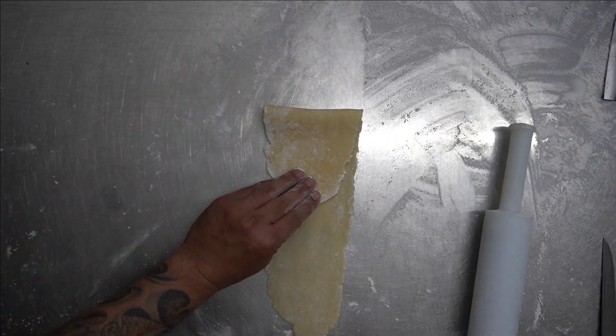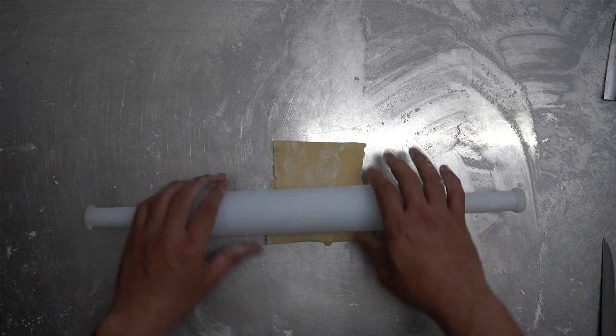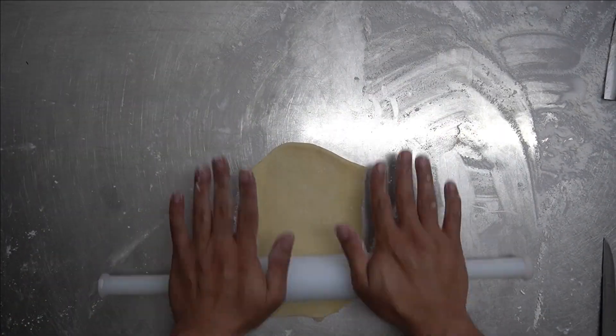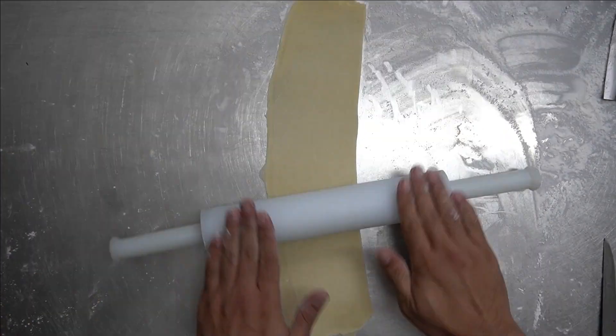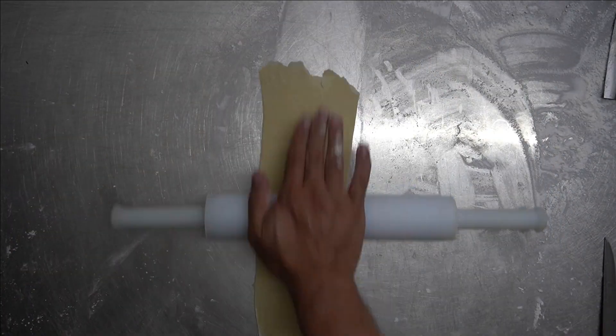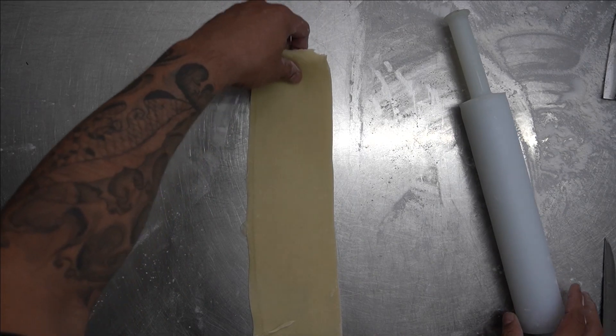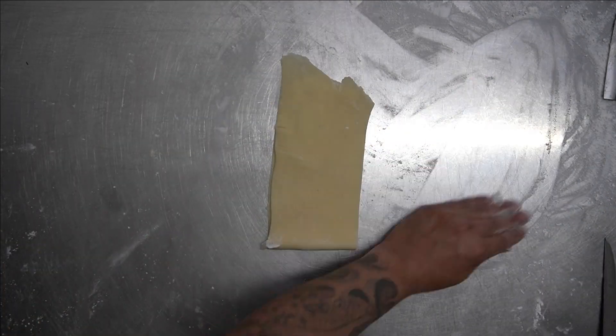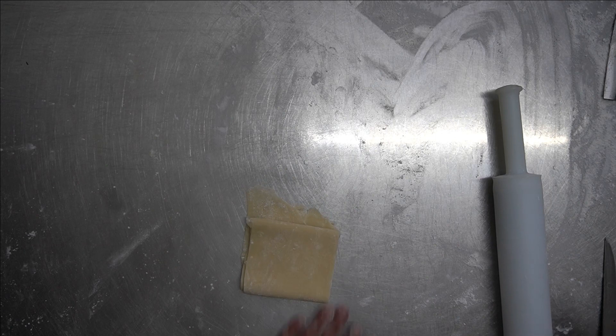Fold it. Once you have rolled it out, dust both sides. After dusting it, you need to cut it.